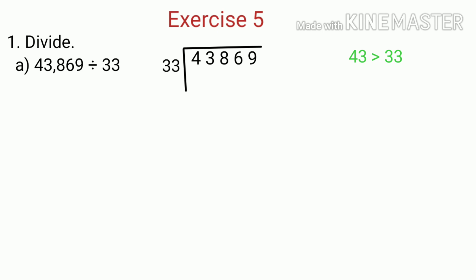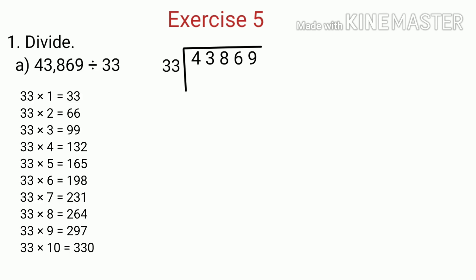Now since 43 is greater than 33, the next step is to do the division. We have to find a product of 33 which is equal to, or less than, and nearest to the number 43. We get the nearest product as 33. So we write 1 in the equation, because 33 multiplied by 1 is 33. And then we subtract 33 from 43, which is equal to 10.